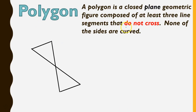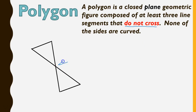Here's a very important one as well: the line segments do not cross. You can see here in this example these lines cross, which means that is not a polygon.